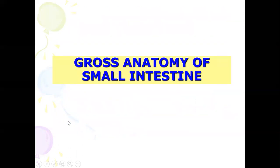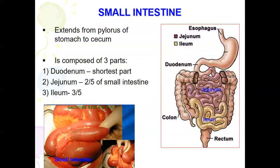Now we proceed to the gross anatomy of the small intestine — the second component. The small intestine extends from the pylorus of the stomach to the cecum. It begins at the duodenum and ends at the cecum.